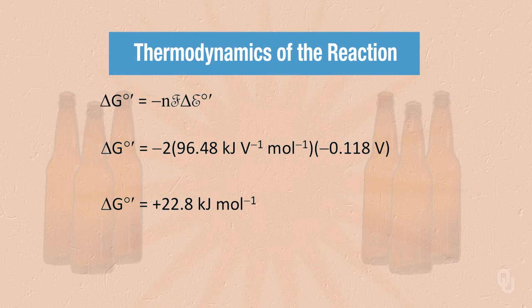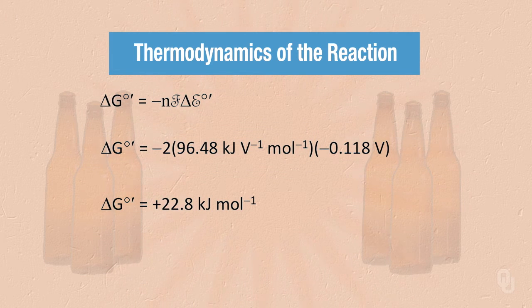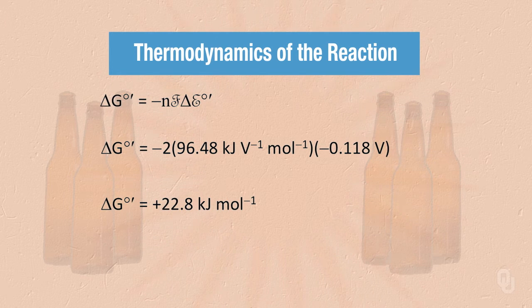This negative sign might seem odd, so we need to explore further. Using the modified Nernst equation with N equal to 2 electrons, Faraday's constant of 96.48 kJ per volt per mole, and delta E naught prime of minus 0.118 volts, we get delta G naught prime equal to plus 22.8 kilojoules per mole. A positive delta G naught prime means the process is not thermodynamically favorable, and we are in a conundrum we need to resolve.